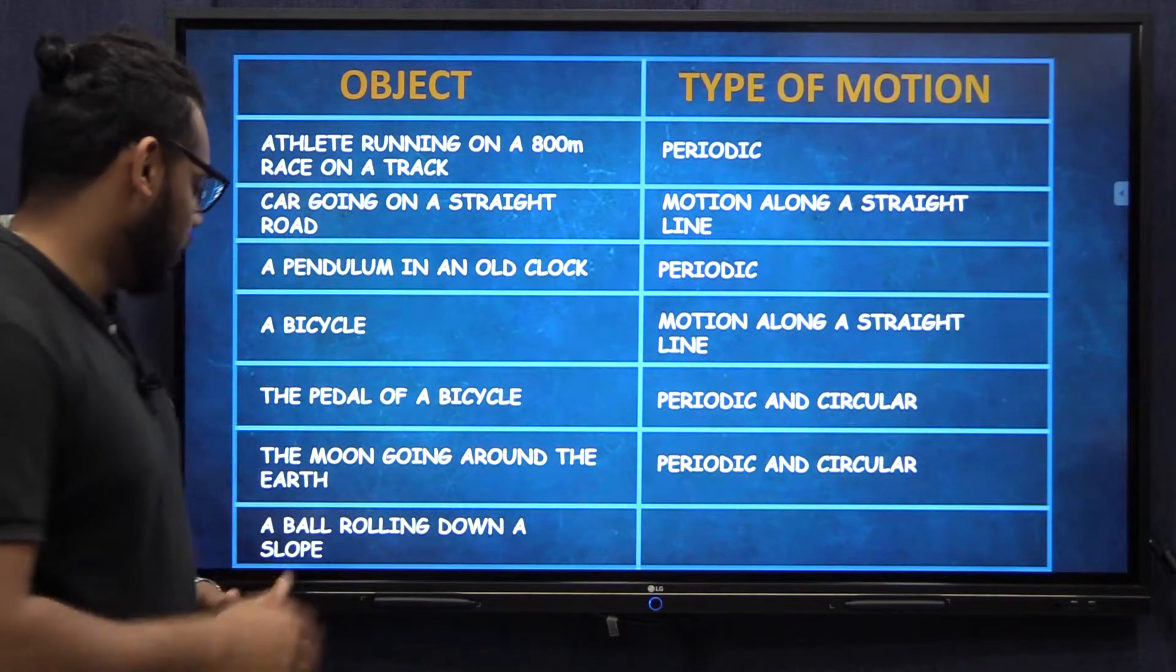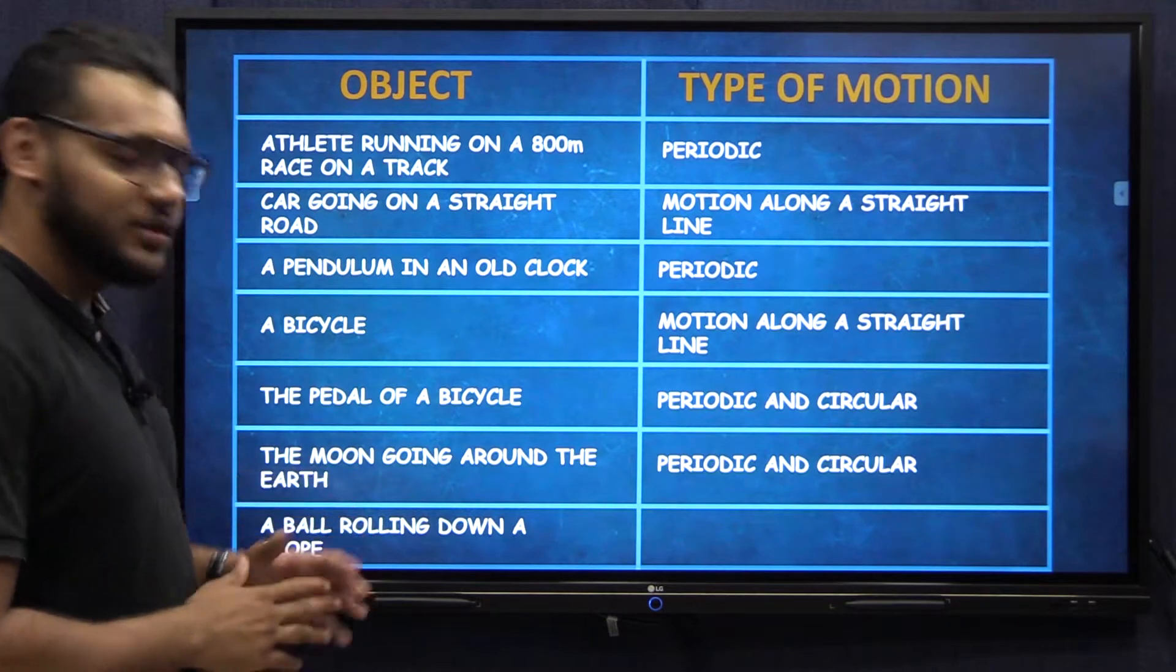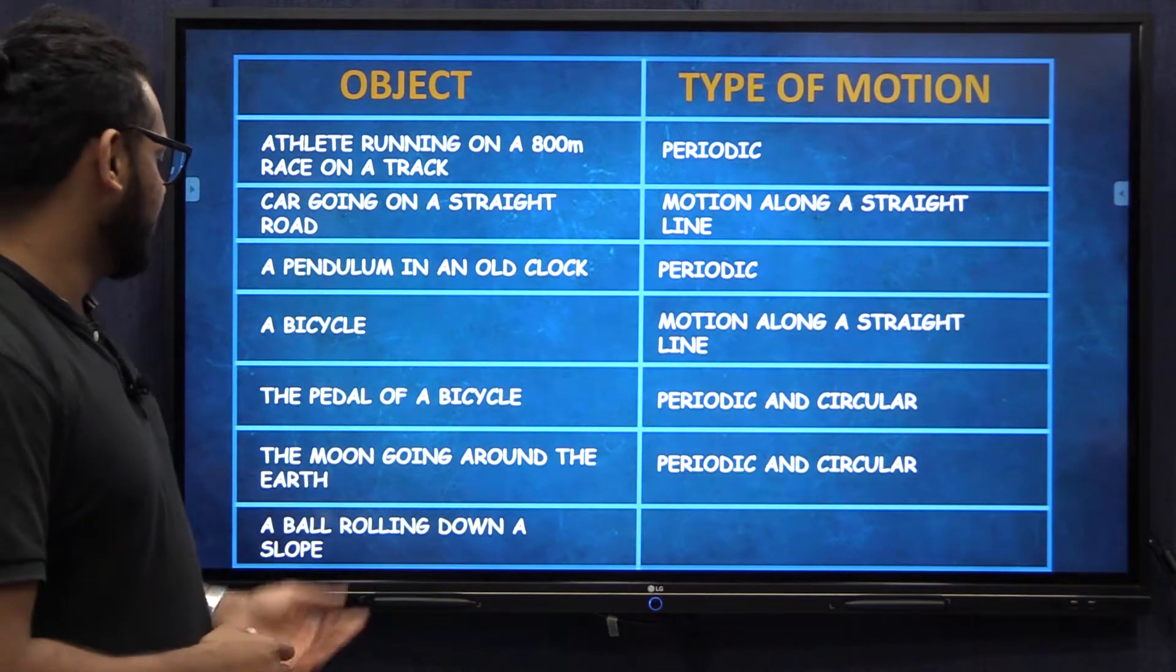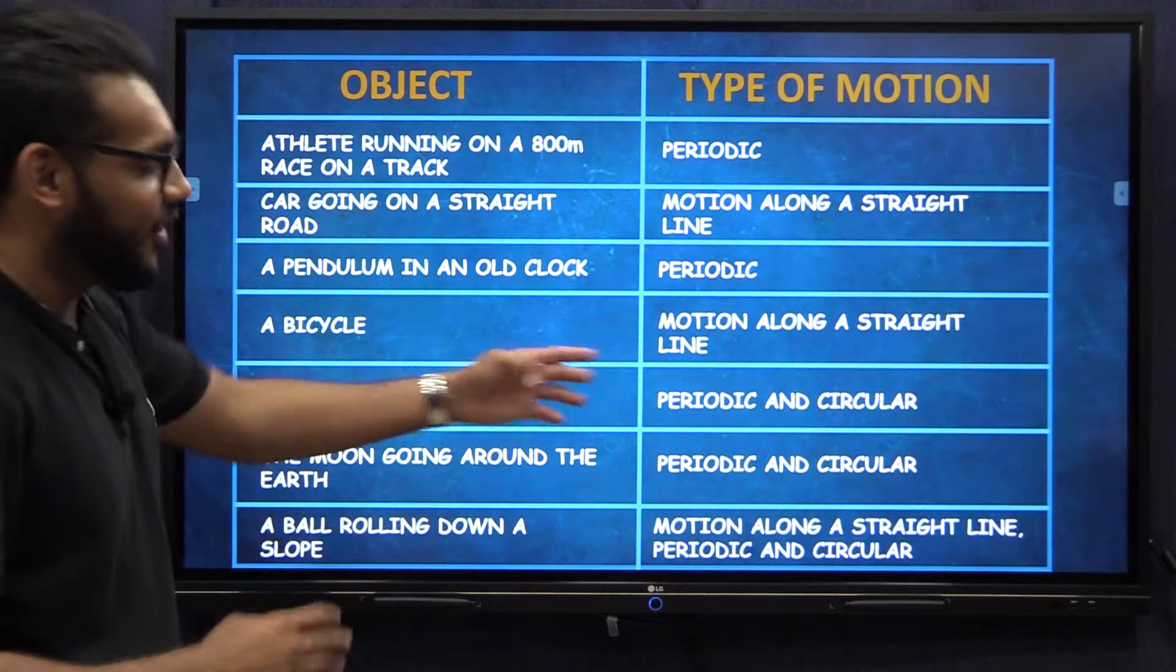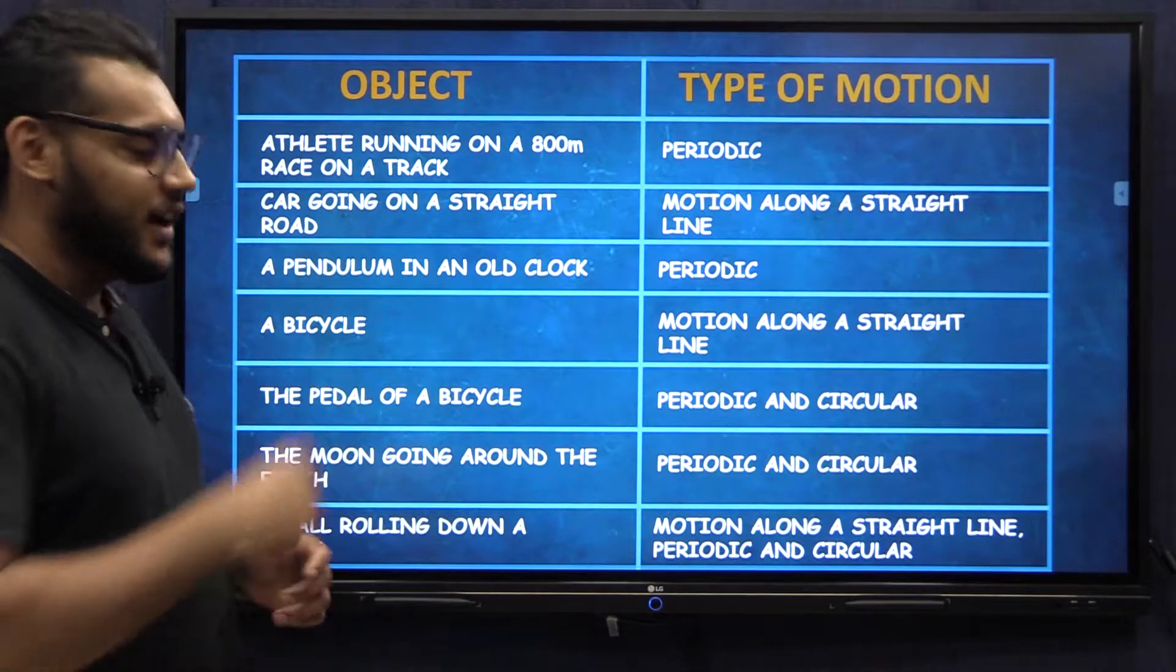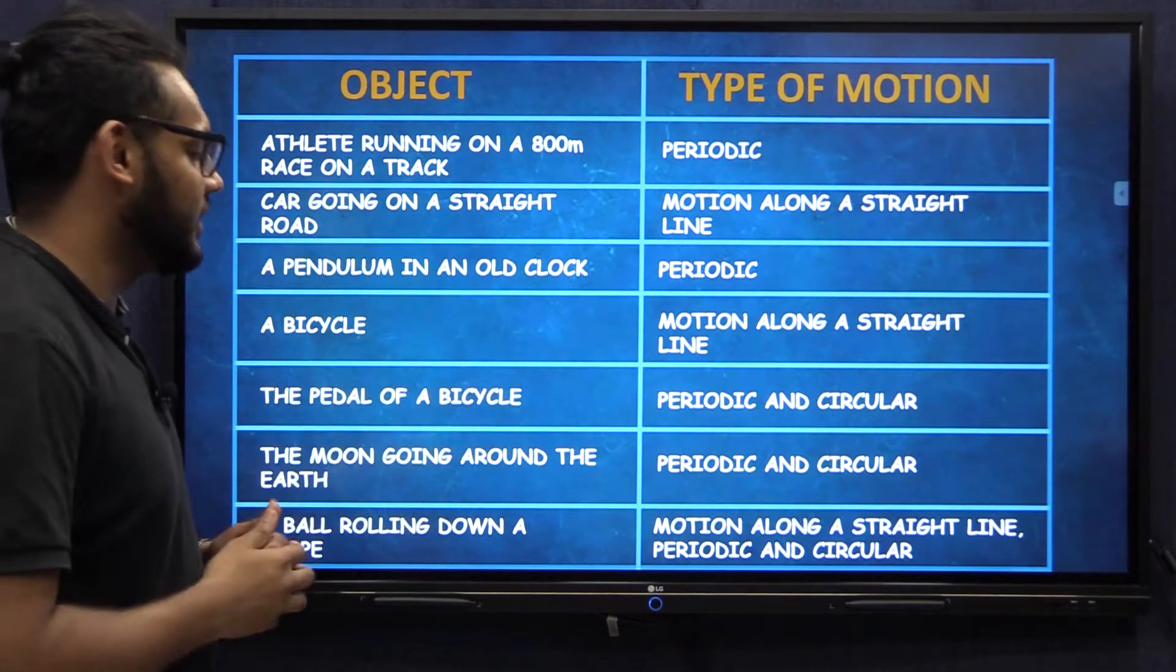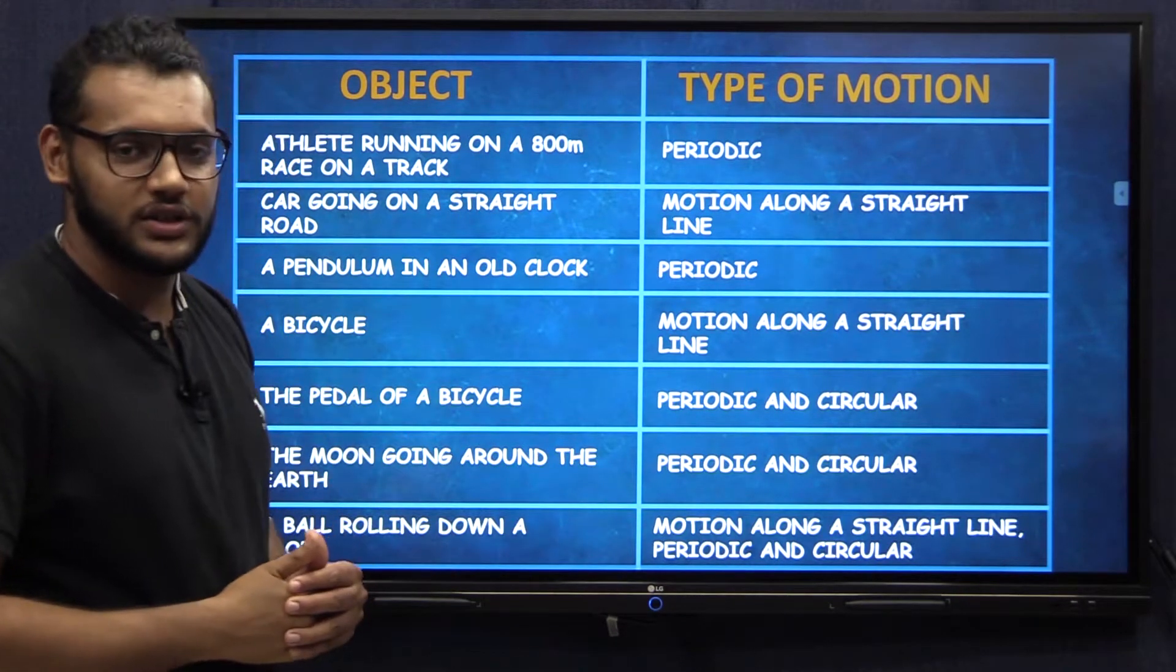Now what about a ball rolling down a slope? This is a bit tricky. I want you to think about this. Imagine a ball rolling down a slope. What all motions do you think would be there on this one? Well the answer is all of them. The ball is rolling down so it's going in a straight line. Because it's rolling there's the circular motion, and because this circular motion is also associated with the time period as well, it's periodic as well.